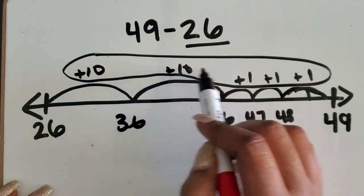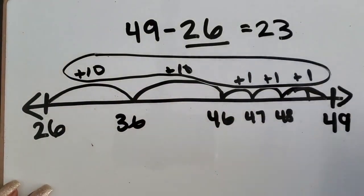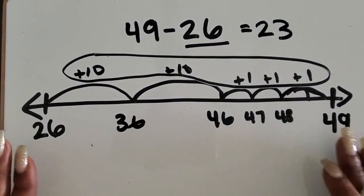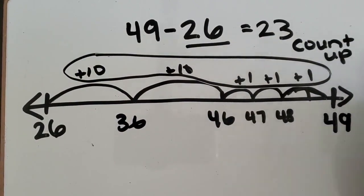Here is my difference this time. 10, 20, 21, 22, 23. The difference is 23. That's how you use it to count up in order to subtract.